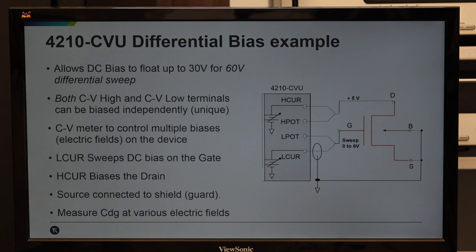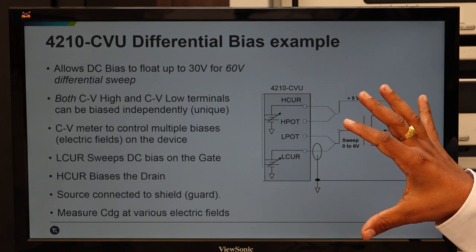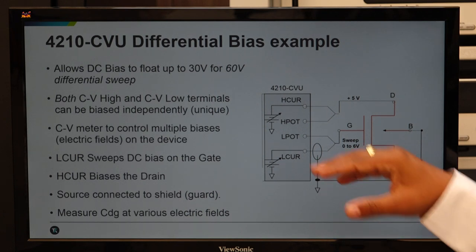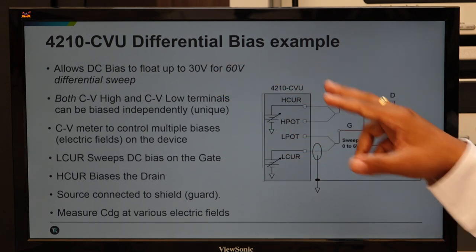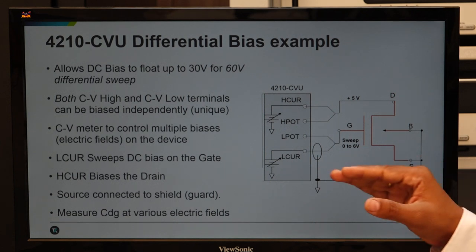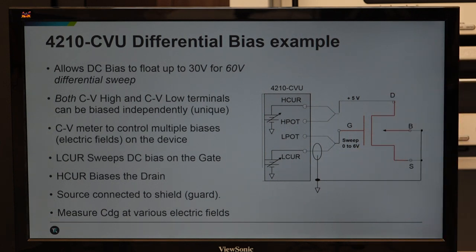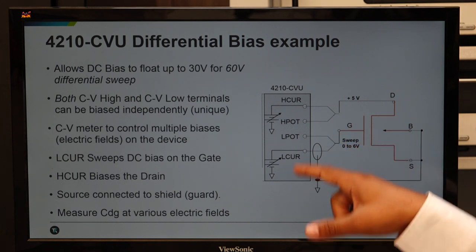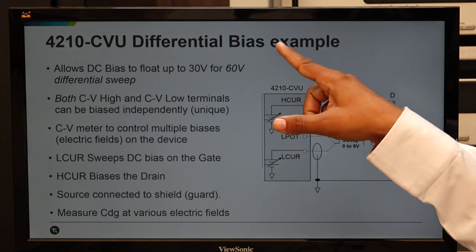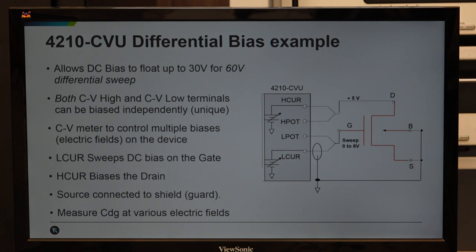For CV measurement using the CV meter with additional DC bias, Keithley provides differential bias T's. Two types are available — one supporting up to 200 volts DC and another up to 3 kV. The internal CV meter with additional bias can be combined using the bias T and then connected to the devices. This can be used for high power MOSFET testing.